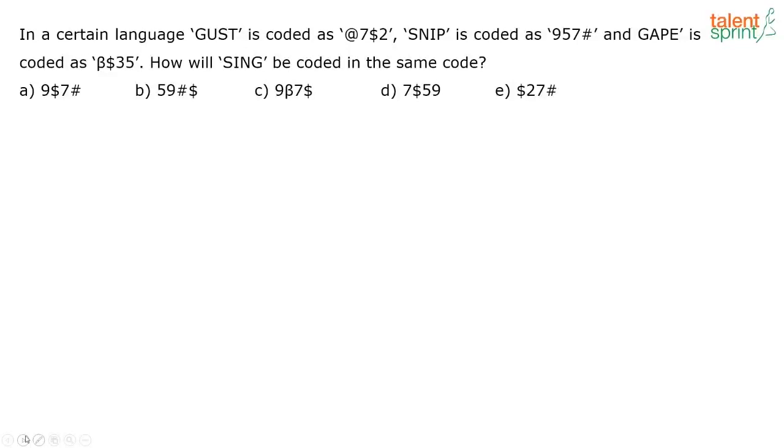Next one. Again, this question was posted by one of our students. This was part of our tests. This one actually it's a very easy question. See, how you do it is you have to find out the code for SING. Now, look at the word SNIP here. S, N, I, P is there.